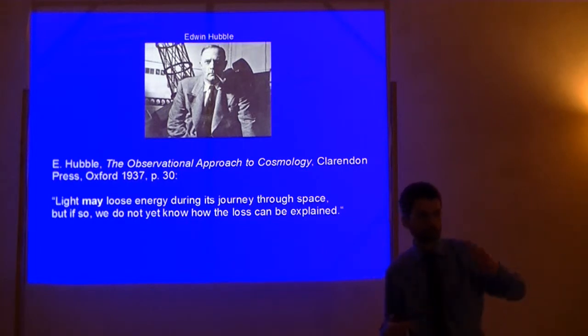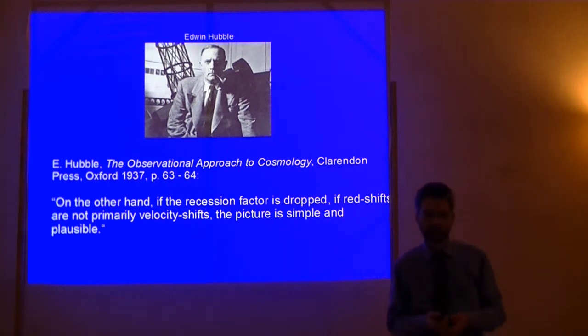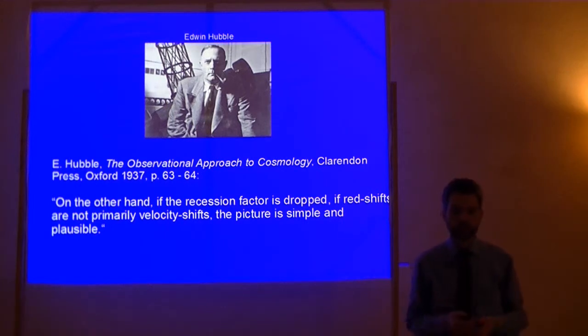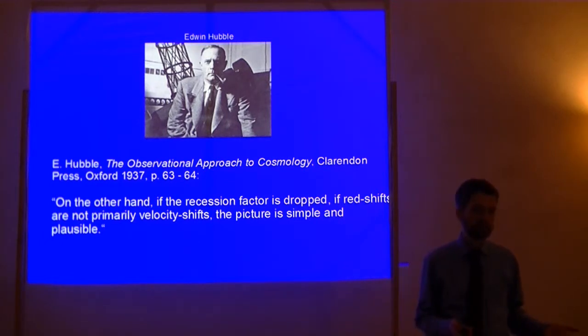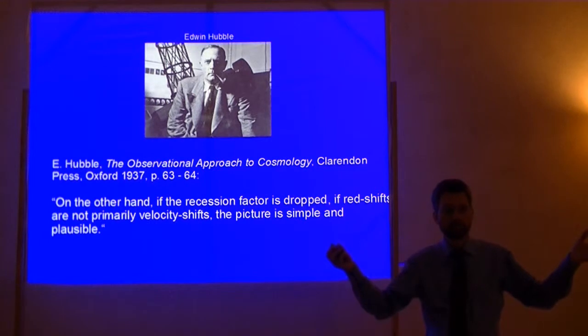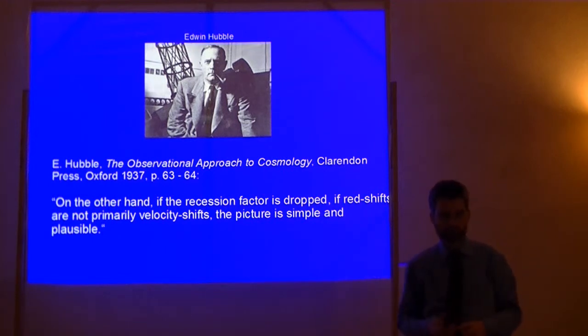And what could be a source for the redshift instead of movement? He writes in The Observational Approach to Cosmology, light may lose energy during its journey through space, and the loss of energy corresponds to a loss of frequency, a redshift. But if so, we do not yet know how this loss can be explained. So he speaks of tired light. In its long journey, energy could be lost. And then he continues in the same work. On the other hand, if the recession factor is dropped, if redshifts are not primarily velocity shifts, the picture is simple and plausible.